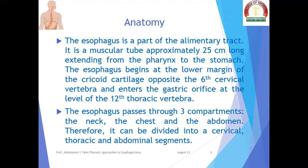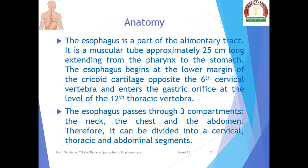The esophagus is a part of the alimentary tract. It is a muscular tube approximately 25 centimeters long, extending from the pharynx to the stomach. The esophagus begins at the lower margin of the cricoid cartilage opposite the sixth cervical vertebra and enters the gastric orifice at the level of the 12th thoracic vertebra. It passes through three compartments — the neck, the chest, and the abdomen — and is therefore divided into cervical, thoracic, and abdominal segments.